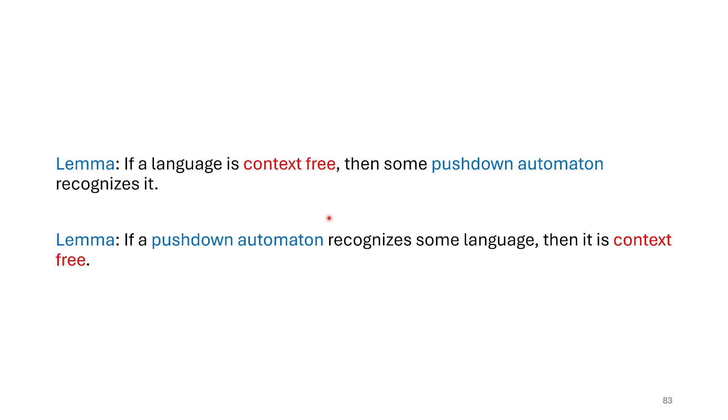So we're going to split that if and only if into the two directions, and then we're going to address each one at a time, which is a typical way to prove an if and only if. The first one is if the language is context-free, then there's a pushdown automaton. That's saying if you have a context-free grammar, then you can make some PDA for it. And then we flip it on its head saying, if you have a PDA, then you can make a context-free grammar for it. So we've split these into two different lemmas. We'll prove them one at a time.